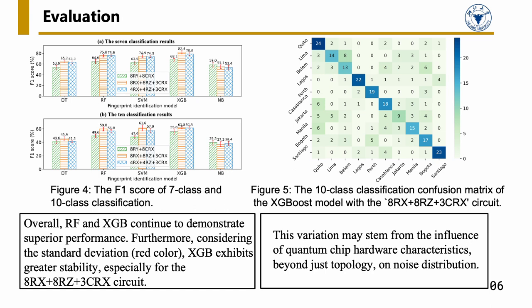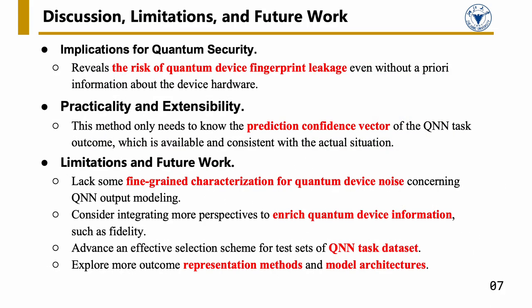Firstly, our study reveals the potential risk of quantum device fingerprint leakage, even without prior information about the device hardware. Second, this method only requires knowledge of the prediction confidence vector of the QN in task outcome. Third, future work should explore integrating additional perspectives, such as fidelity measurements, to enrich quantum device information.